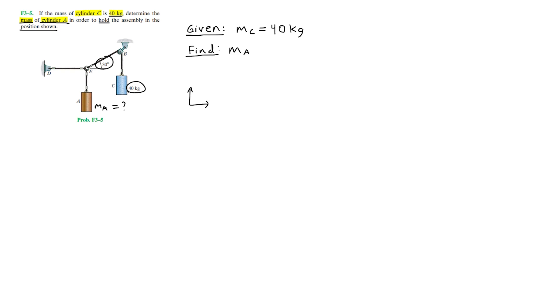Now I'll redraw the sketch to show all the forces. First, let's focus on point B, since that is where the known mass is acting. Point B carries the weight of the cylinder C, which we can write as WC.